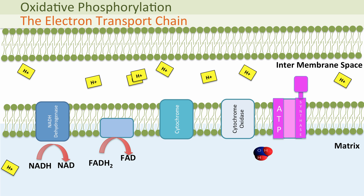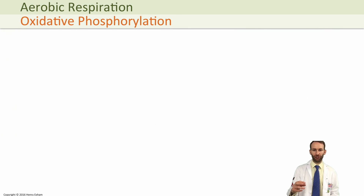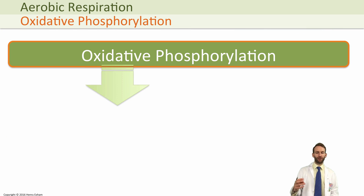The chain is now free to work again — more NADH and FADH can come in, give up their electrons, the electrons move down the chain, and the energy is used to pump the hydrogens across into the intermembrane space. So what we've got now is a massive electrochemical gradient built up in the intermembrane space. We now need to move on to the second part of oxidative phosphorylation, which is called chemiosmosis.